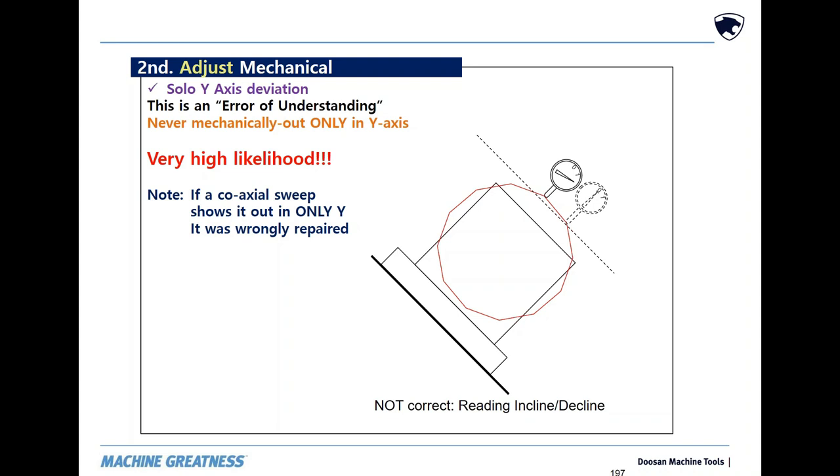Curvic back surfaces are the first slip point, and their rotation would cause movement in both X and in Y. If a coaxial sweep shows as being out only in Y, then someone tried comping X to fix that rotation in the XY. Indicate the top of the turret for inclination and declination. If it is not parallel to the X travel, the Curvic has slipped. This is a mechanical repair.